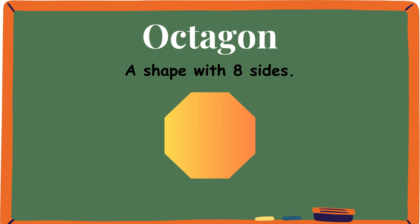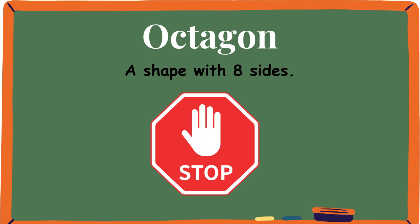Octagon. A shape with eight sides. This stop sign is an octagon because it has eight sides.